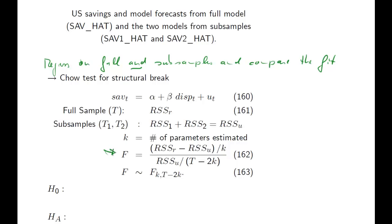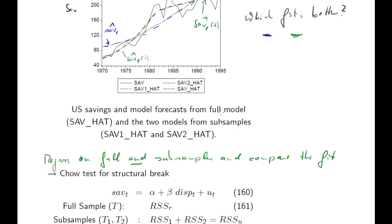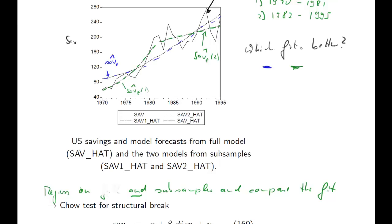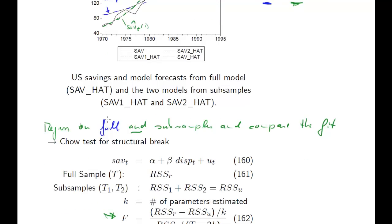In an F-test, we need a restricted and an unrestricted version. Now which of these two? The full, estimating on the full, restricts the coefficients to be the same. So this is going to be the restricted model. Whereas using the subsamples will be the unrestricted, because that will allow the coefficients to change. So this will be now reflected in our F-test.